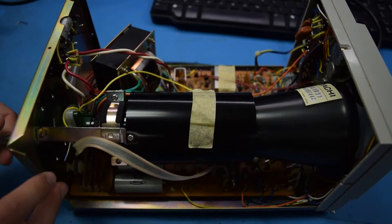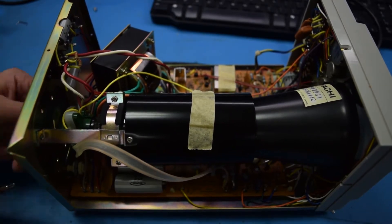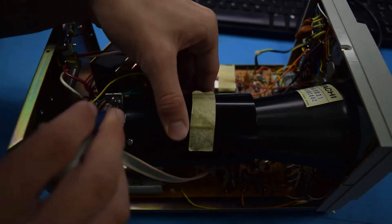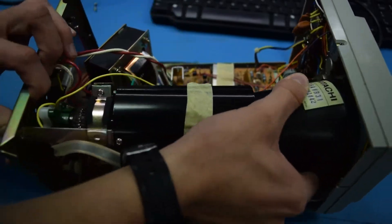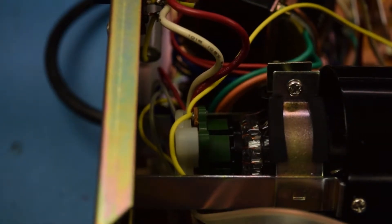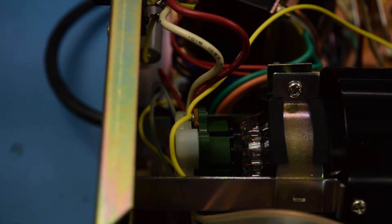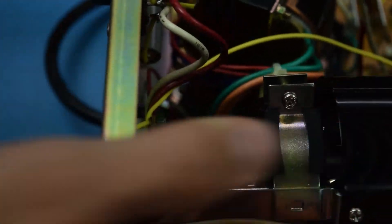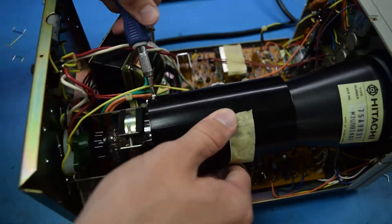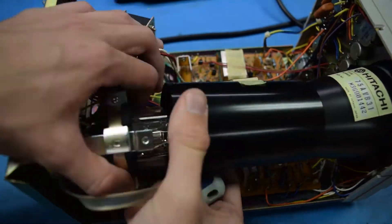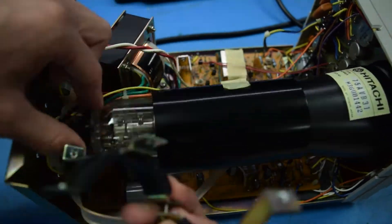So I decided to take the cathode ray tube completely out of this oscilloscope. This way, you can have a better look at it, and I can better explain how it works. I've zoomed up here on the end of the CRT to show you this socket that connects the rest of the circuit to it. To completely remove the CRT from here, I'm going to have to disconnect the socket. With the socket removed, all that we have to do now is find the additional fasteners holding this oscilloscope in place and remove them.